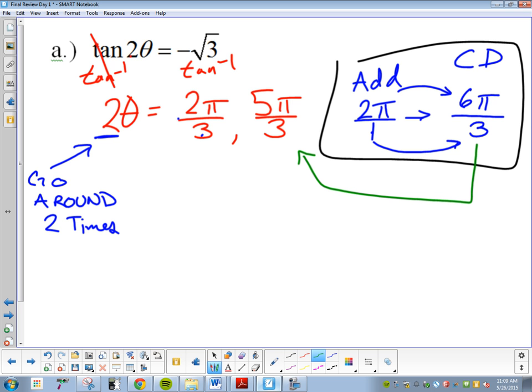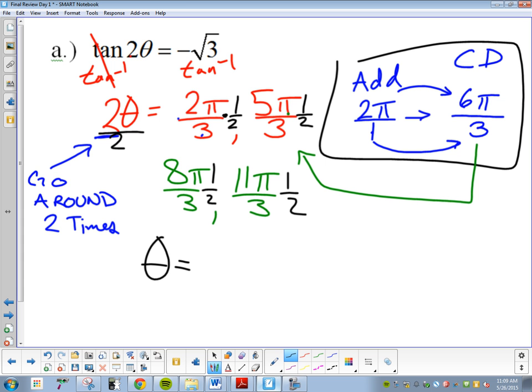And then, remember, we are going to take 6 pi over 3 and add it to those two numbers. So, it's going to be 6 pi over 3 plus 2 pi over 3, which gets me 8 pi over 3. And 6 pi over 3 plus 5 pi over 3, which gets me 11 pi over 3. Does that make sense what I've done there? I am not done. What do I still need to do with this problem in order to be finished? It's theta by itself. Not yet. What do I need to do to make it by itself? Divide by 2, which is the same thing as multiplying each of these things by a half. So, theta equals 2 pi over 6, 5 pi over 6, 8 pi over 6, and 11 pi over 6.